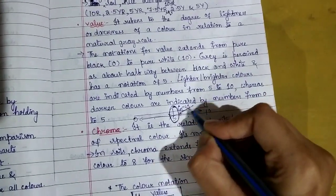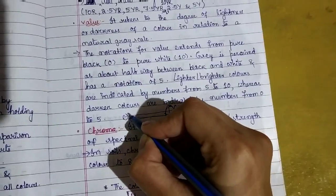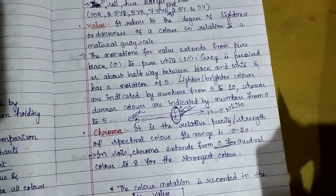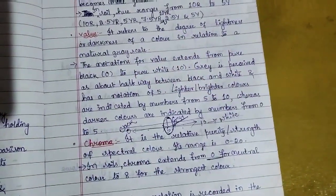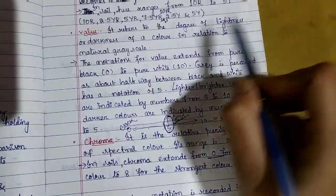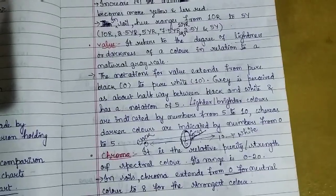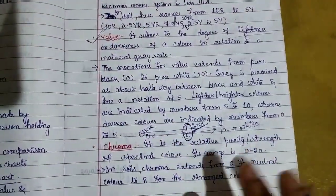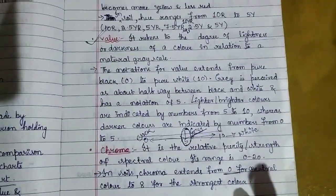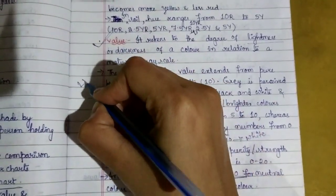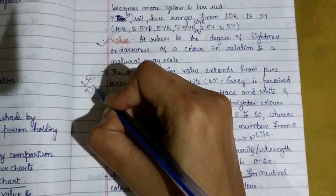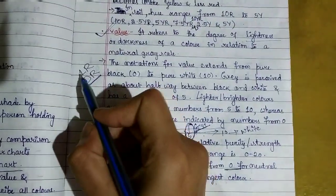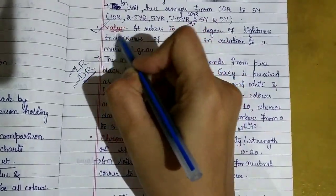0 is black color and 10 is white color. Value tells us how light or dark the soil is. For example, when you are wearing a dress, you might say light red dress or dark red dress. So how light or dark the soil is gives us the value.